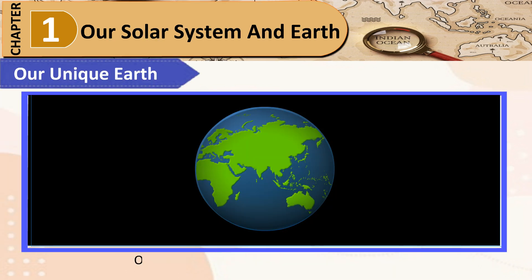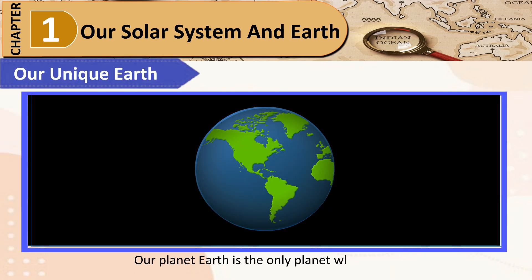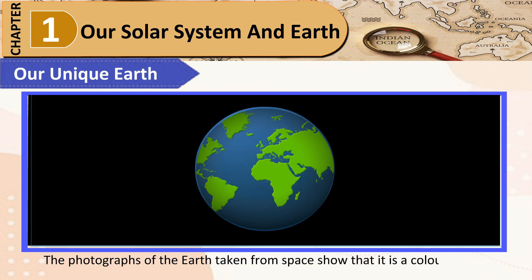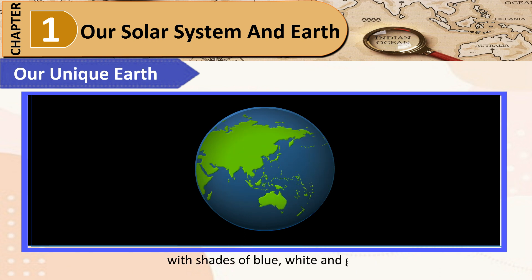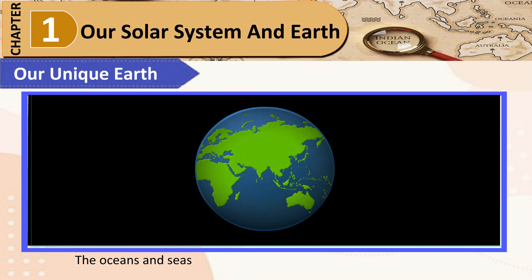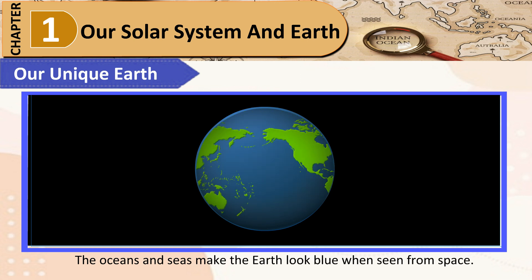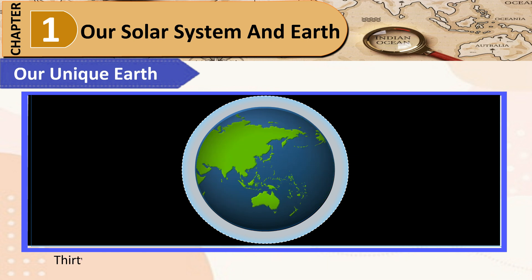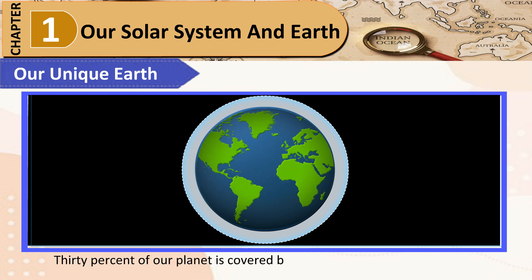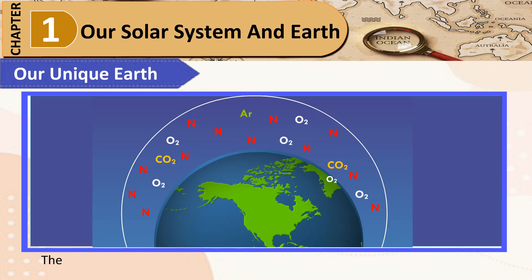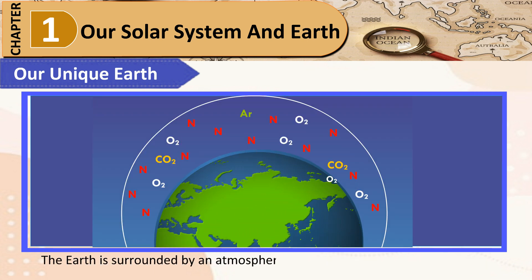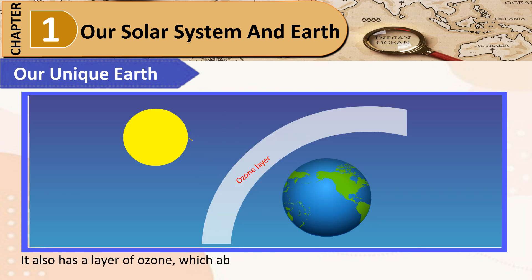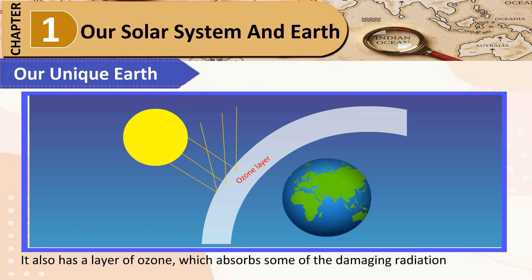A Unique Earth: Our planet Earth is the only planet which has life. Photographs of the Earth taken from space show that it is a colorful planet, with shades of blue, white, and green. The oceans and seas make the Earth look blue when seen from space. The white color represents clouds, and green shows the vegetation. 30% of our planet is covered by land and 70% by water. The Earth is surrounded by an atmosphere of nitrogen, oxygen, and water vapor. It also has a layer of ozone, which absorbs some of the damaging radiation from the Sun.